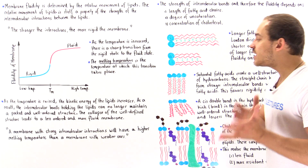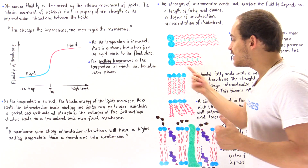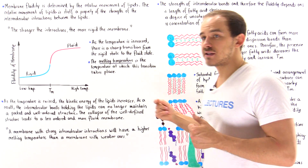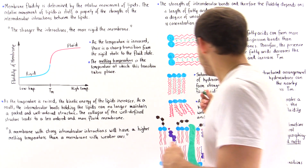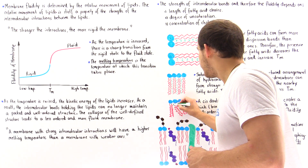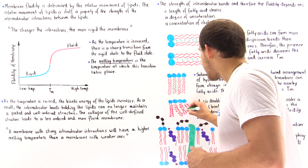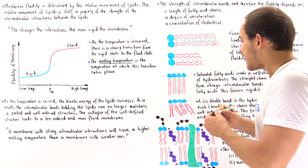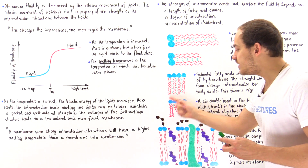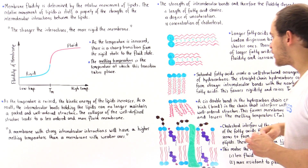Because of that bend, the interactions are not as strong or extensive as in the saturated case — we simply have fewer of these interactions taking place. With fewer interactions, the fluidity in this case will increase and the melting temperature will decrease.